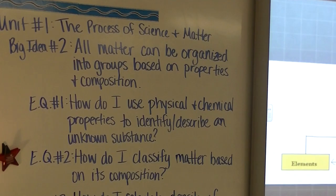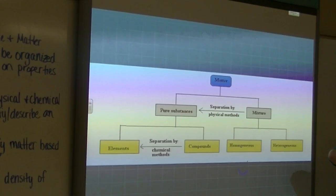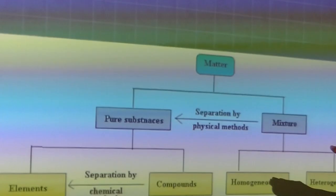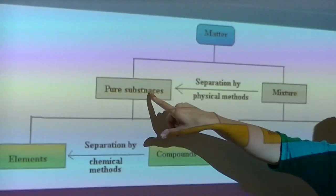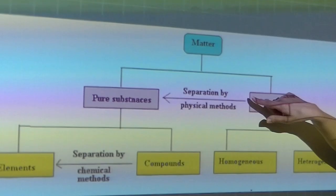So back to our big idea, all matter can be organized into groups based on properties and composition. We did properties yesterday, we're going to do composition today. So you have notes in front of you, a graphic organizer. So matter is at the top.